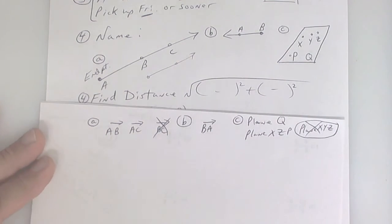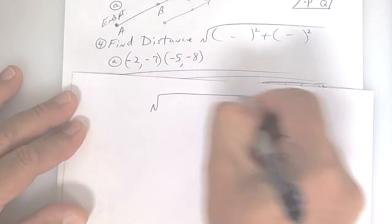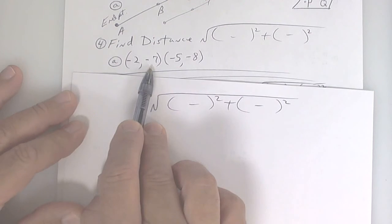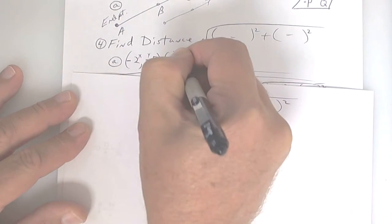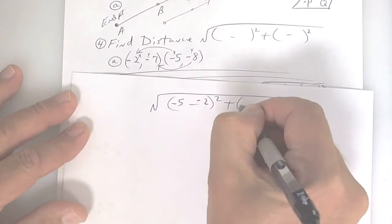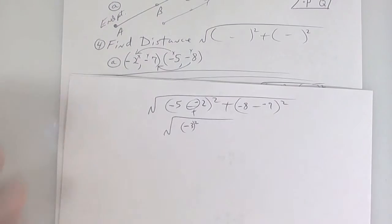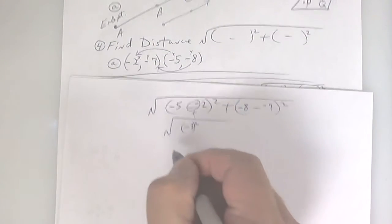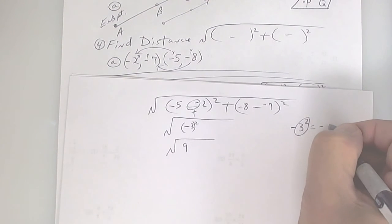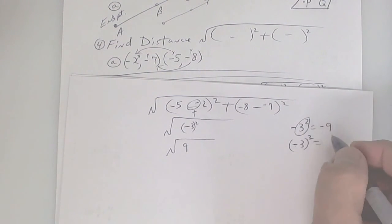We learned the distance formula yesterday, so let's take a look. It doesn't matter which point you start with. Label them x1, y1 and x2, y2 — that might help you keep your x's together. So we have negative five and negative two, then negative eight and negative seven. This gives you a double negative, so that becomes negative three squared. On your calculator, if you press negative three squared it only squares the three, giving negative nine — but if you put negative three in parentheses squared, it squares the negative too, and that's what you want.